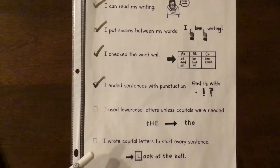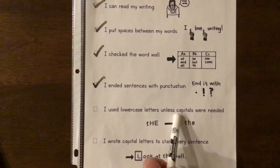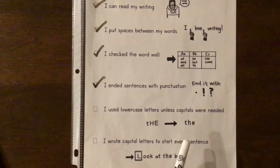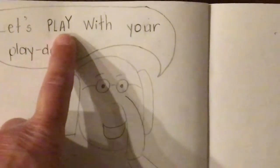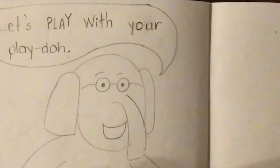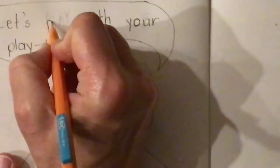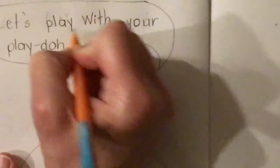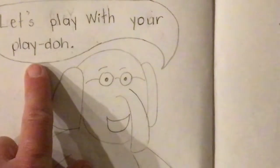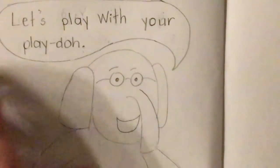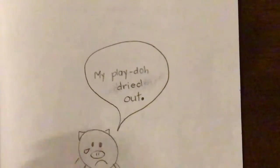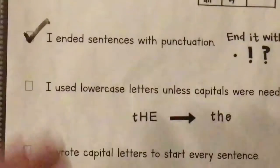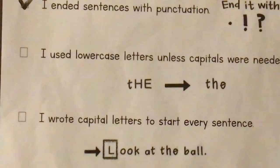I just have two more things on my list to check off. Right now I'm going to check to make sure that I used lowercase letters unless capitals were needed. And capitals — we'll check to make sure they're at the beginning of the sentence. Oh no! When I zoom in, I see some uppercase letters that shouldn't be in the middle of a sentence. Better fix that: lowercase p, lowercase l, lowercase a, and y. 'Let's play with your Play-Doh' — better. And look, I have a capital letter at the beginning. Let's check over here — yep, lowercase letters and only a capital at the beginning. I can check off the last two things on my editing checklist.